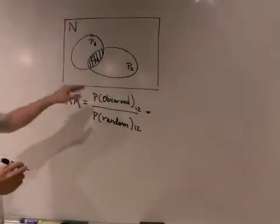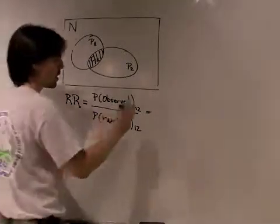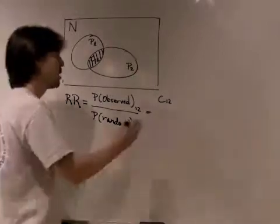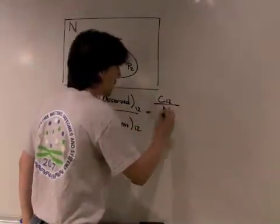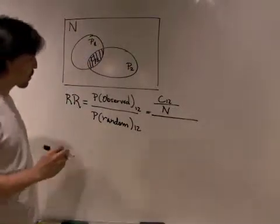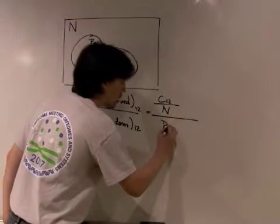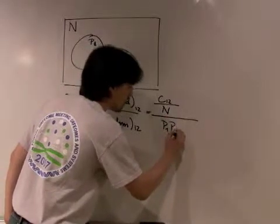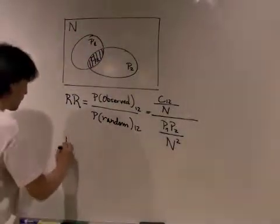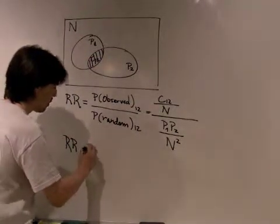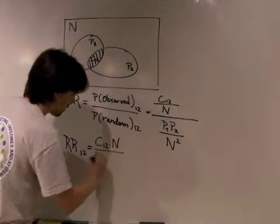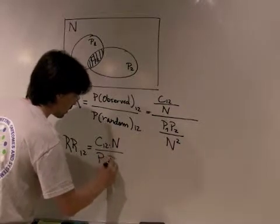The observed probability of having two diseases affect a patient is the number of times we see those pair of diseases affecting a patient divided by the total number of patients in the population. The random expectation is the product between the prevalences divided by N squared. Hence, the relative risk between diseases 1 and 2 is given by C12 times N over P1 times P2.